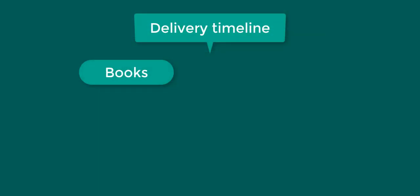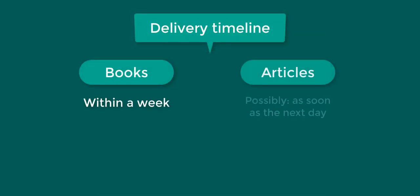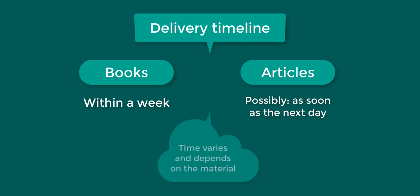Books might arrive at Greenlee Library within a week and articles might be delivered to your account as soon as a day later, but this depends on the other libraries and how quickly the material can be found. The time to delivery does vary and cannot be guaranteed. Please allow as much time as you can for us to obtain the item for you.